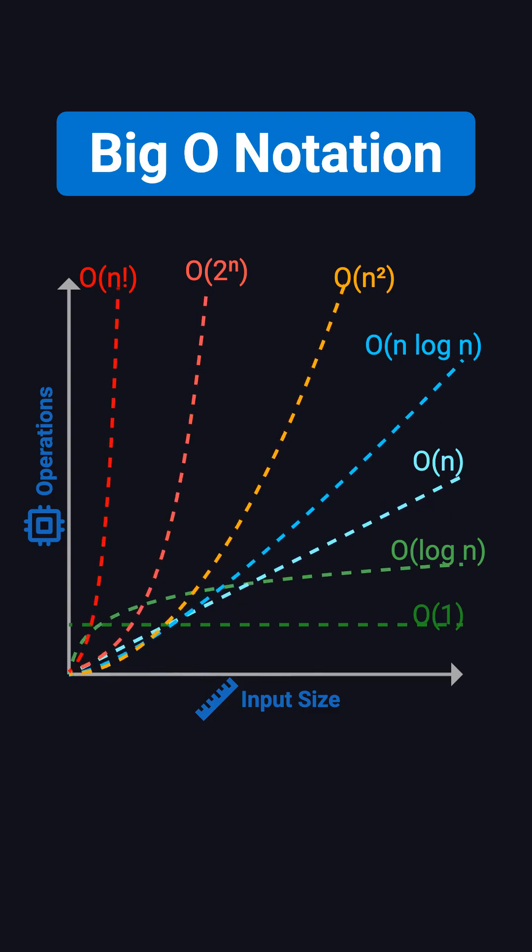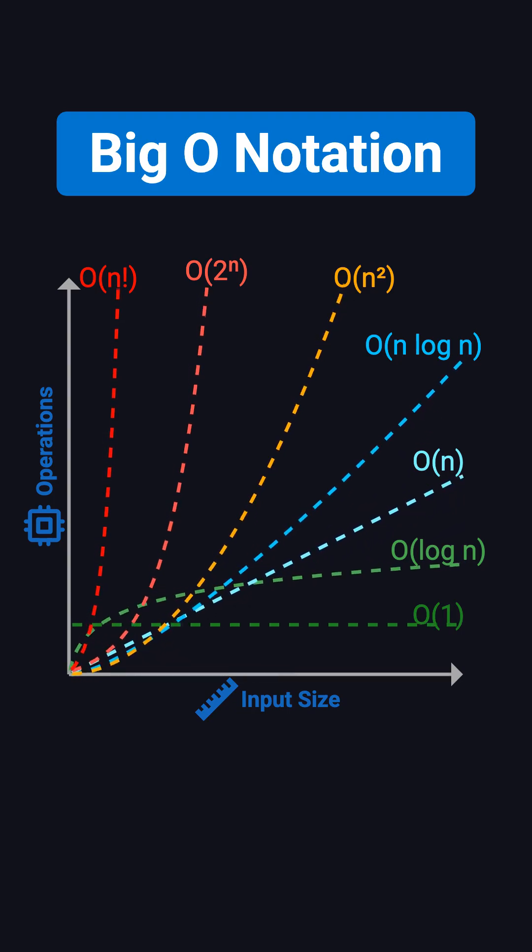In short, mastering Big O is the foundation of learning algorithms and data structures. It helps you think like a professional engineer, writing not just code that works, but code that stays fast and stable, even when the amount of data becomes massive.